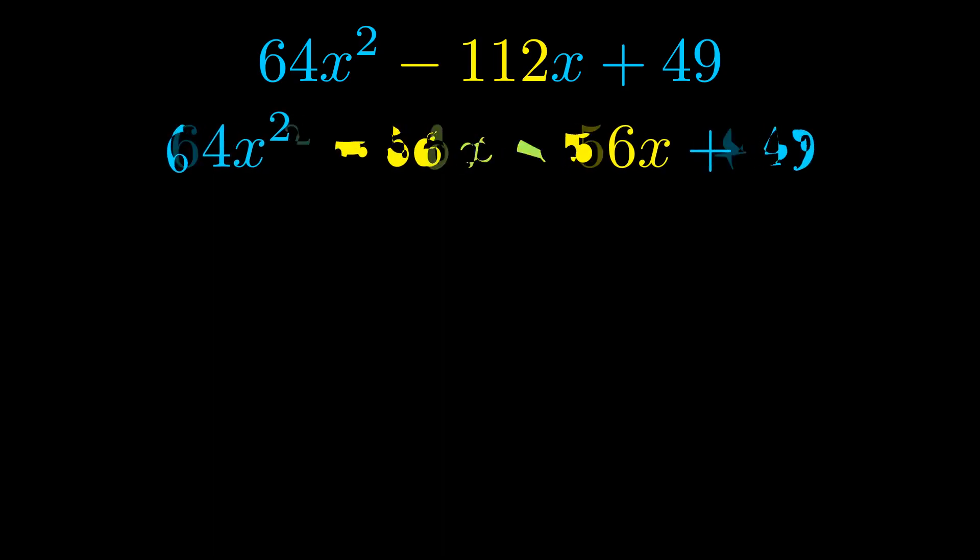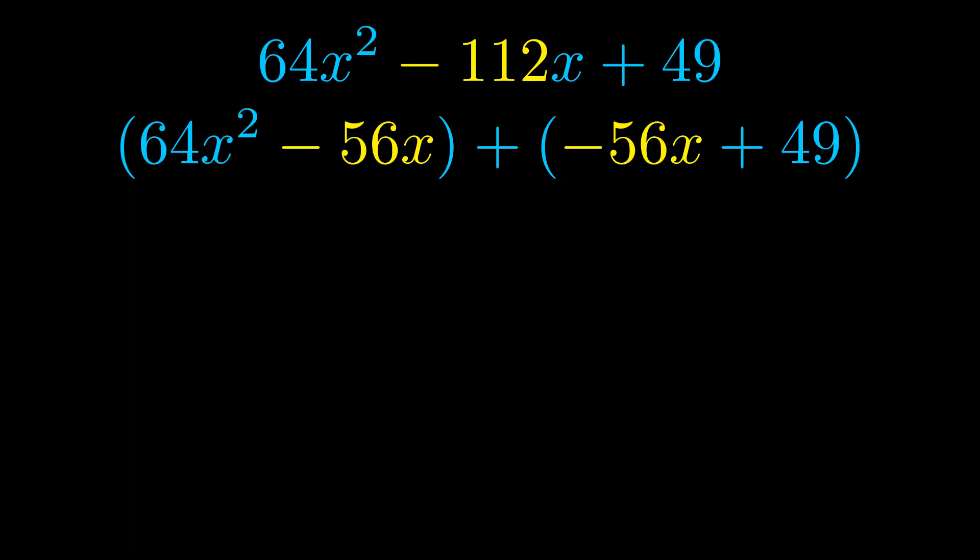Once we've done this, we go ahead and put parentheses around the first term and the last term. And we do that so that we can take the greatest common factor out of both terms.